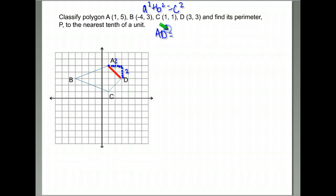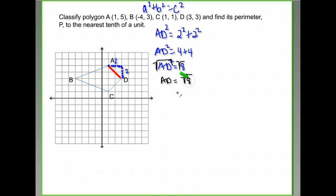So AD is my hypotenuse. It's equal to two squared plus two squared, my two legs. That gives me AD is equal to four plus four. Excuse me, AD squared. So AD squared equals eight.